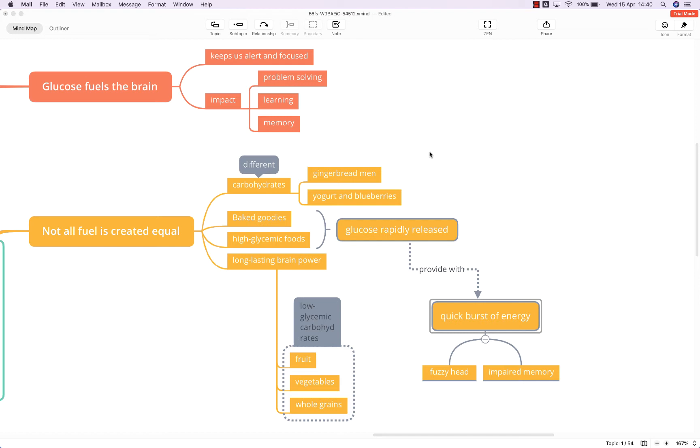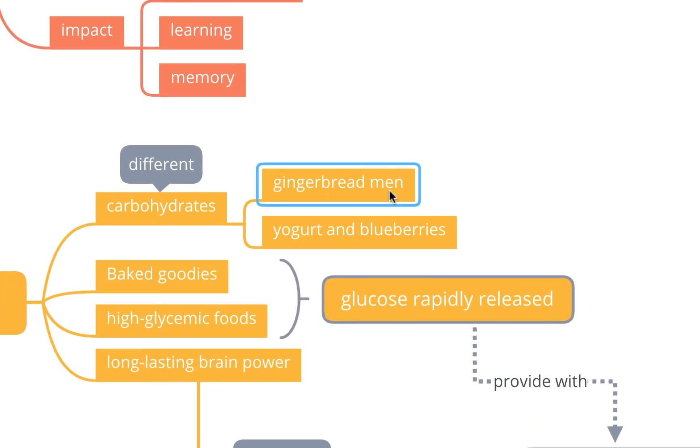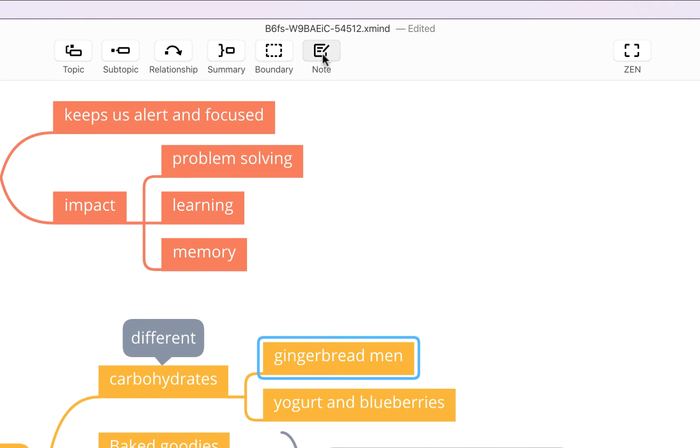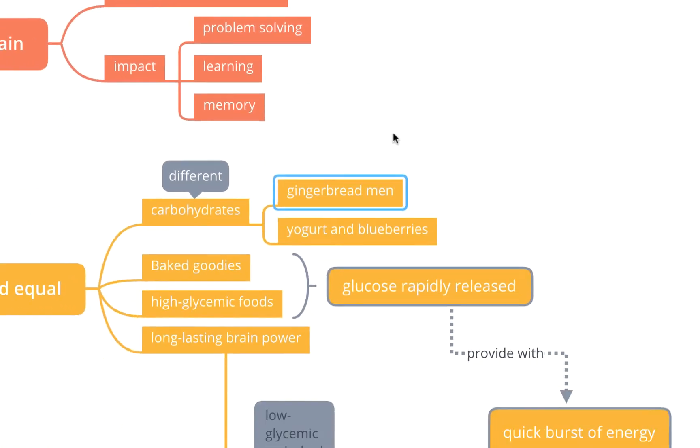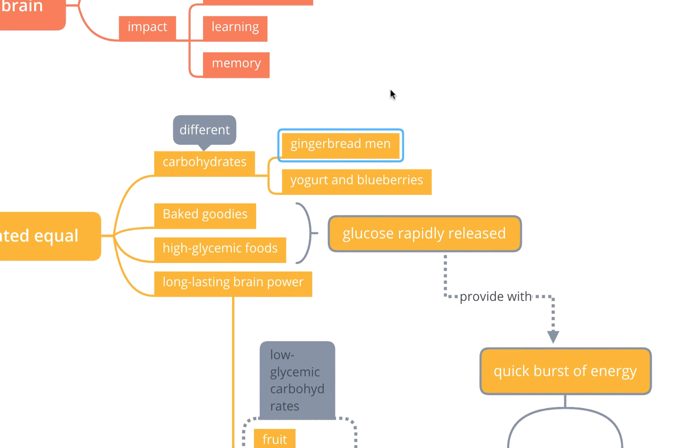To begin we're going to choose a topic that we want to add a note to, so in this case gingerbread men because everybody loves gingerbread men. And to add a note we can either come up to this toolbar up here and this note button or we can use the keyboard shortcut Shift-Command-N or Shift-Control-N on a PC to open the note window.